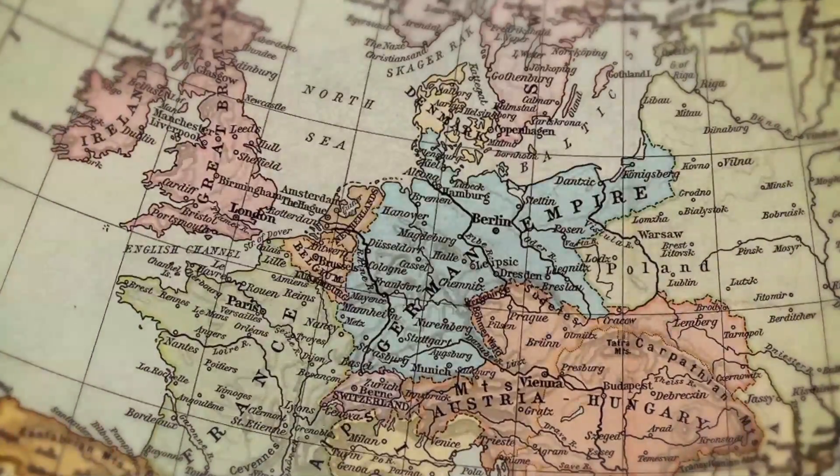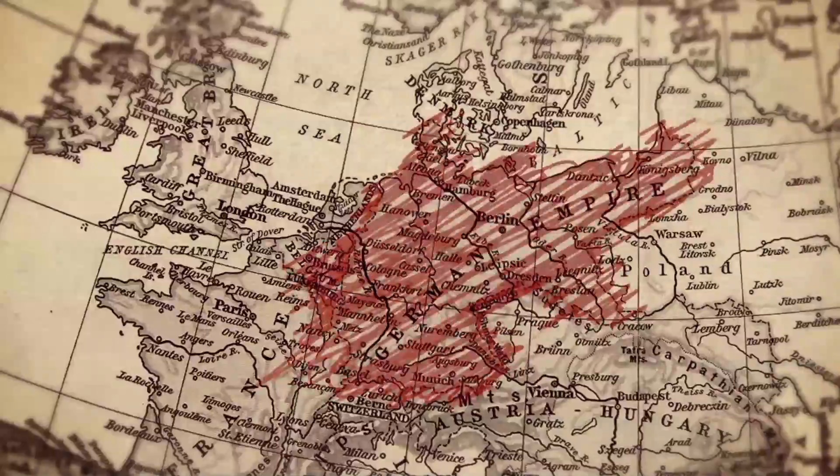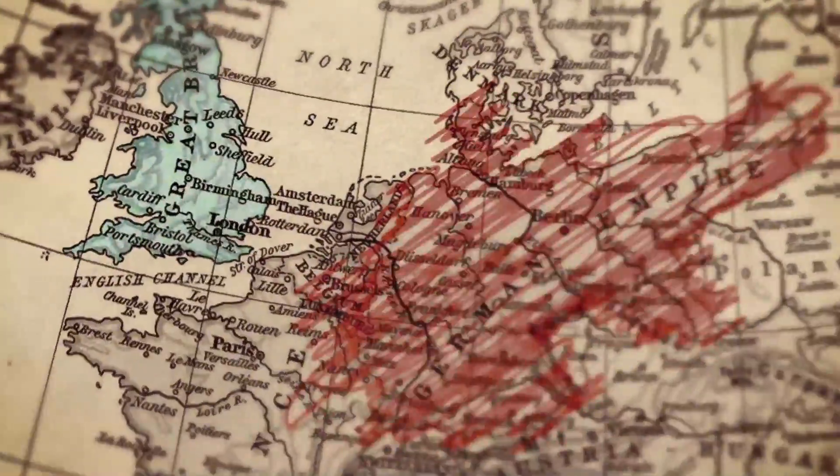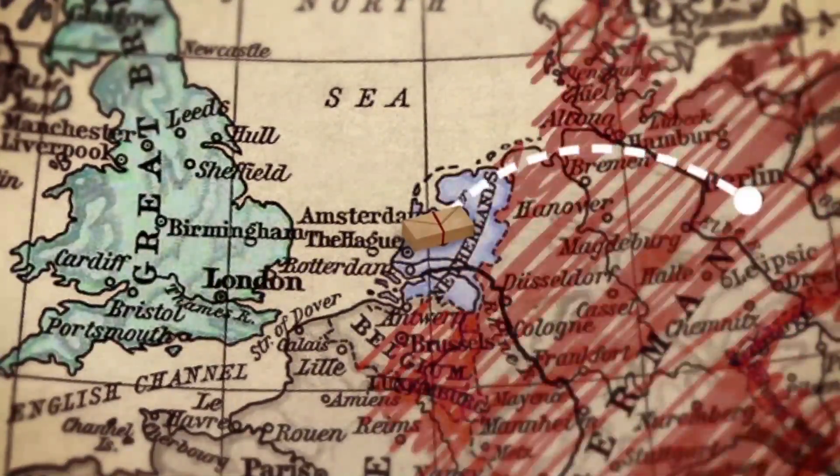While Einstein's idea caused a stir in Germany, the First World War meant news was slow to reach scientists in Britain. Luckily, British astronomer Arthur Eddington was sent a copy of the theory by a friend in the neutral Netherlands.